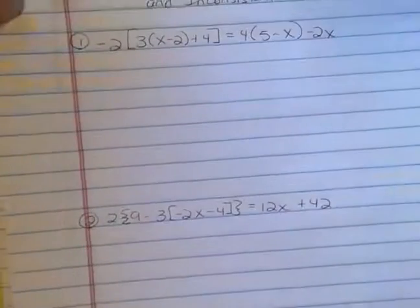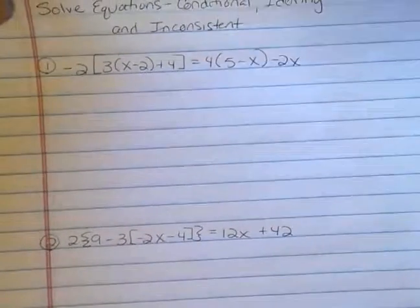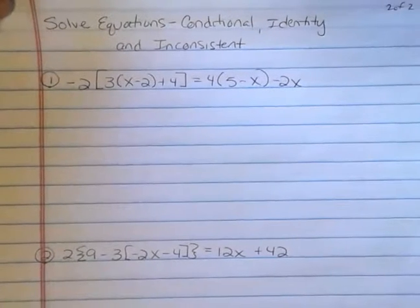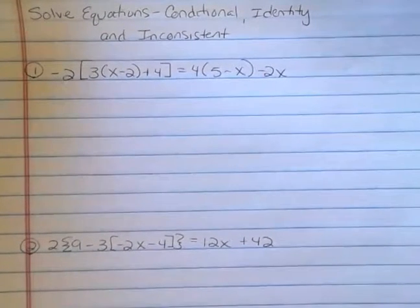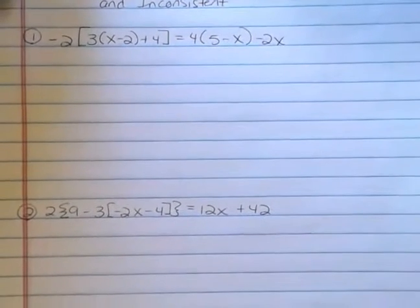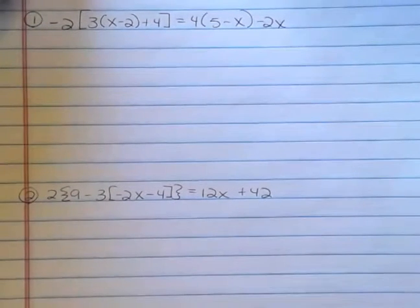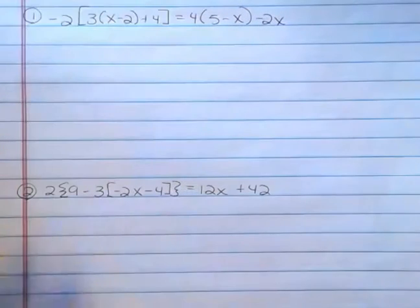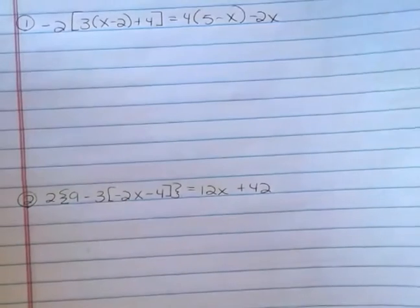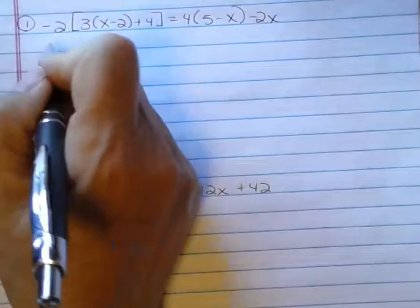I didn't try one that was conditional, because you've solved a gazillion of those already. One of these is inconsistent, and one of these is an identity. And you should try these on your own, and see what you get, and then come back and see if you're right, and see which one was which.